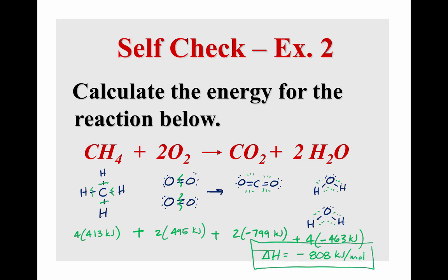Now if you actually did an experiment with this, you might measure that as a slightly different answer. Remember these are estimates, but it's going to be close. It's definitely an exothermic reaction when you burn methane and oxygen. And you should get out somewhere around 800 kilojoules for every mole. So this is how you do a bond energy problem. Good luck with yours and contact me if you have any questions.